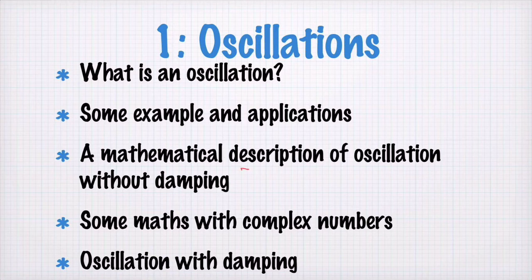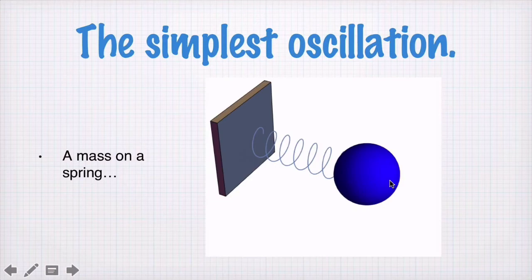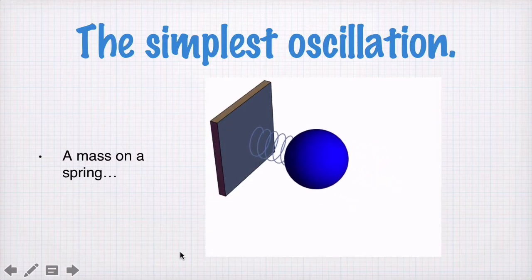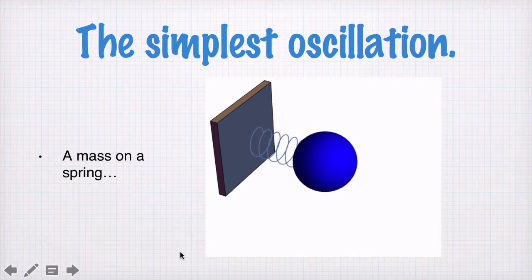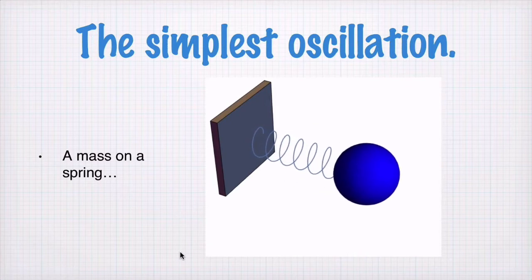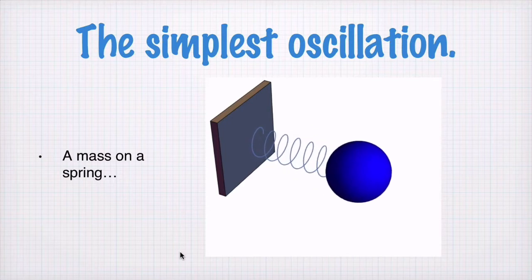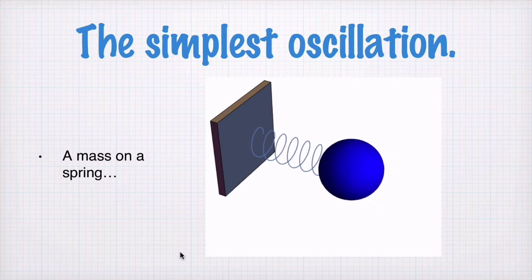Let's look now at this mathematical description of oscillation without damping. The situation we're considering is a mass bouncing backwards and forwards on a spring, and the size of the oscillation doesn't change, which means the energy in the system is conserved. We're not losing energy to the rest of the universe. That's what it means to have no damping.